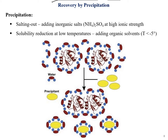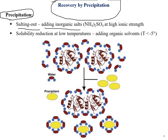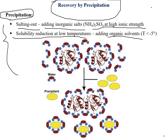The next recovery process is precipitation, or salting out. We precipitate by adding inorganic salts such as ammonium sulfate at high ionic strength. Solubility reduction at low temperature also occurs by adding organic solvents at temperatures below minus 5°C.